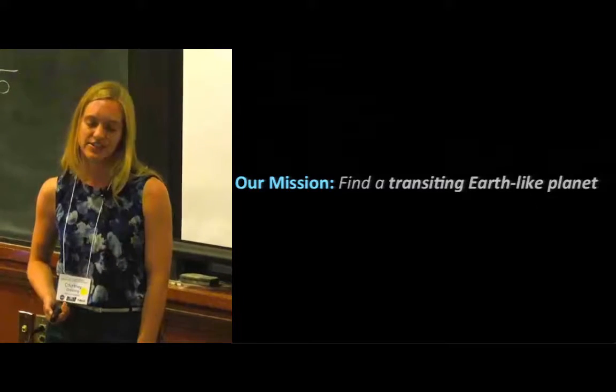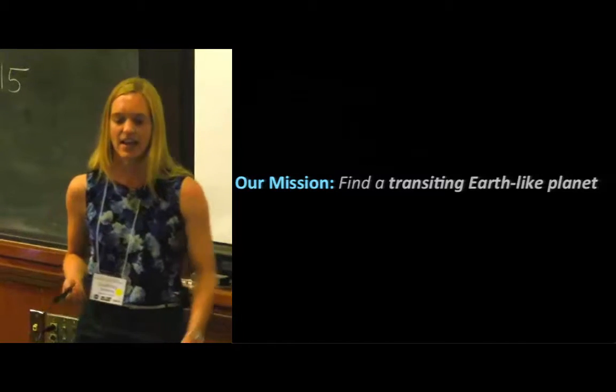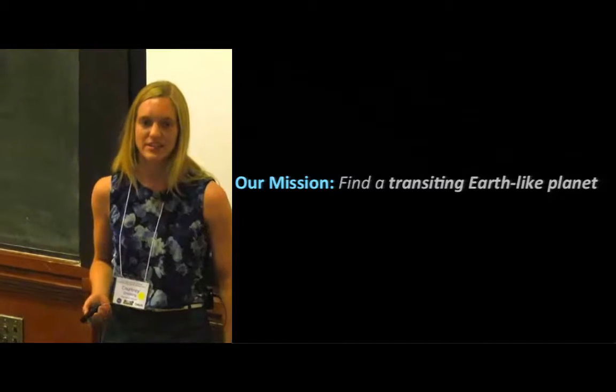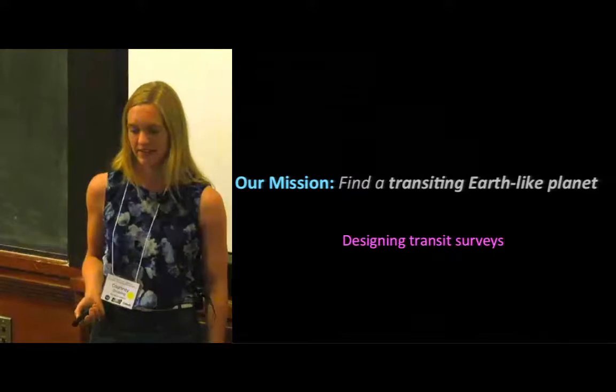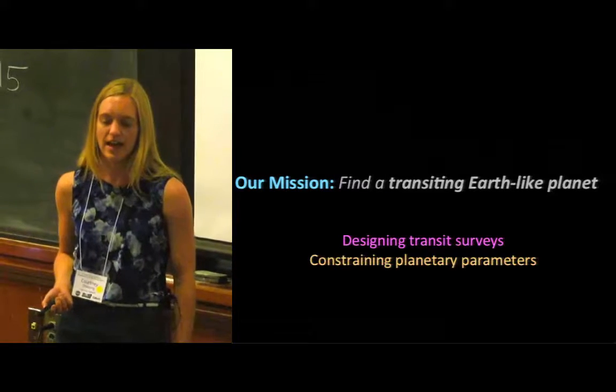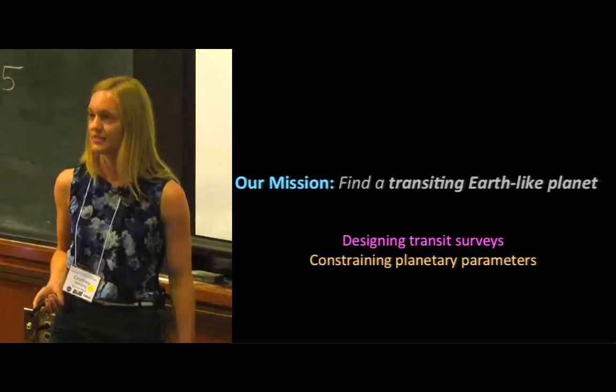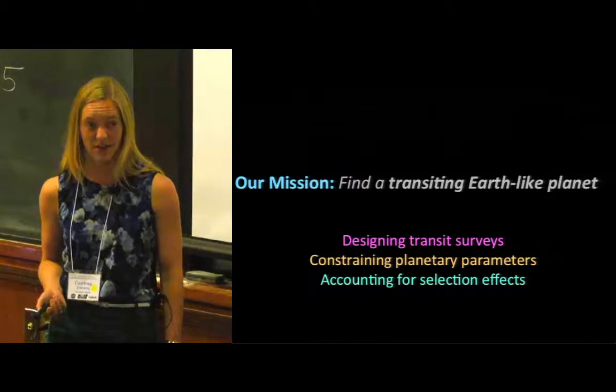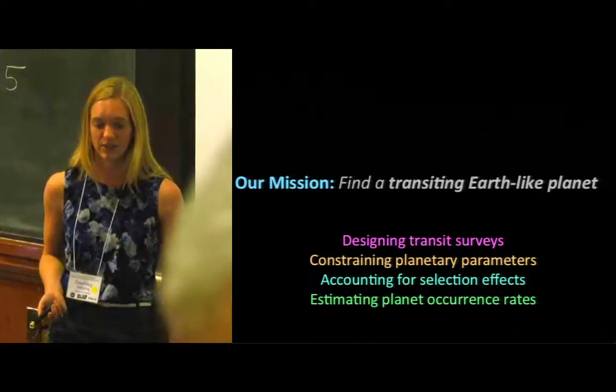Today, we're all going to go on a voyage together and this voyage is going to be to try to find a transiting Earth-like planet. Along the way, we're going to touch on a bunch of different topics. We'll talk about how to design a transit survey and how we might then constrain the properties of the planets we detect. We'll also talk about how to account for selection effects and how to estimate planet occurrence rates.